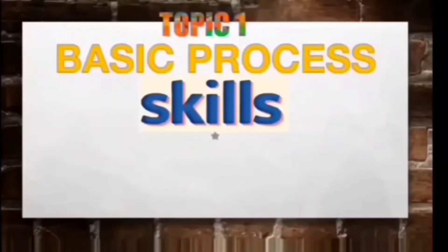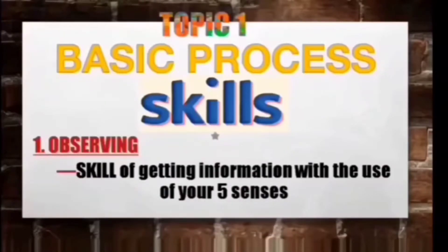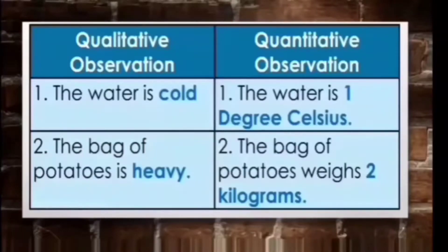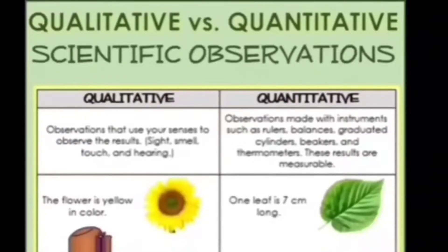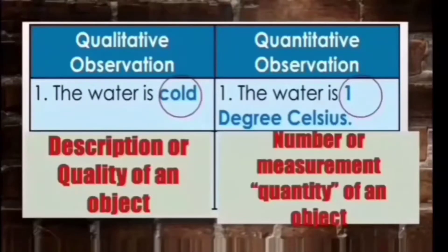We have learned about the first process skill called observing, which is the skill of getting information with the use of our five senses. We have also gotten to know the two types of observations: qualitative observation, which shows the description or quality of an object, and quantitative observation, which shows the number, measurement, and quantity of an object.